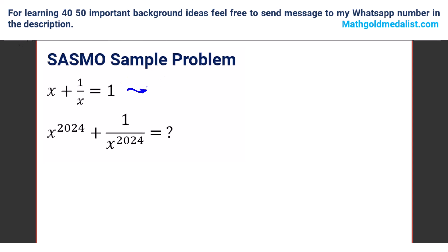Okay, so here, if you get rid of the denominator, it will be — x squared plus x plus 1 is equal to 0.